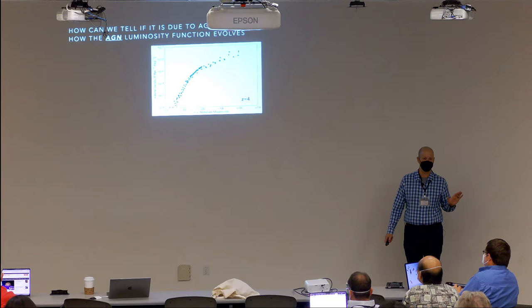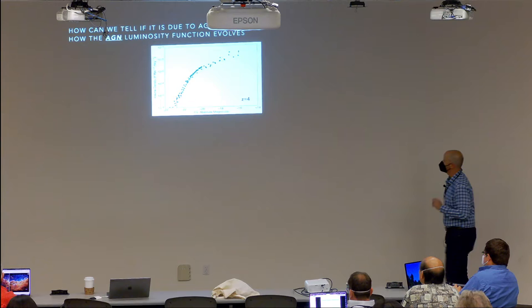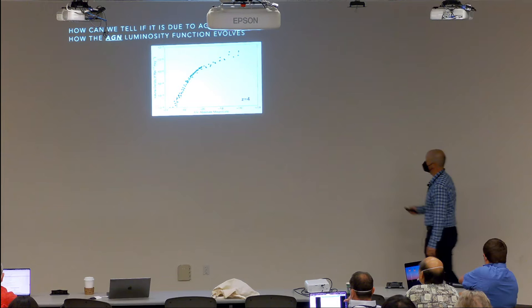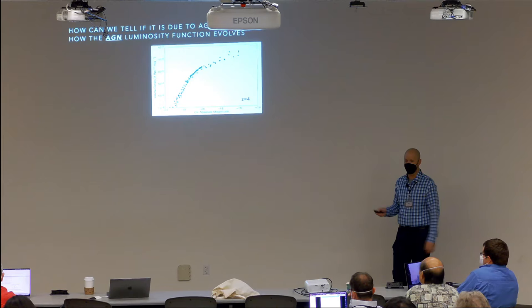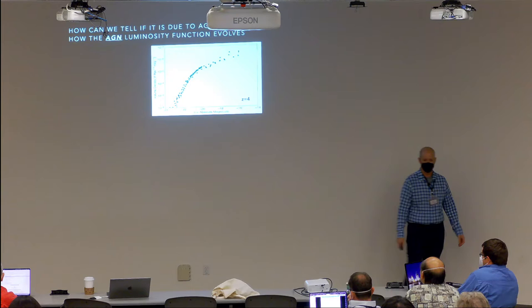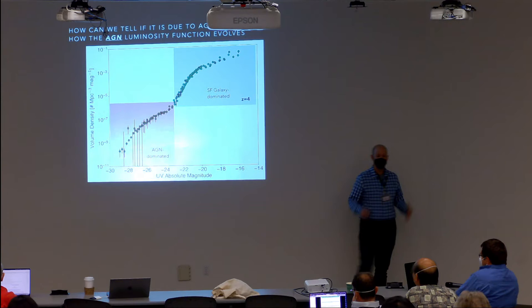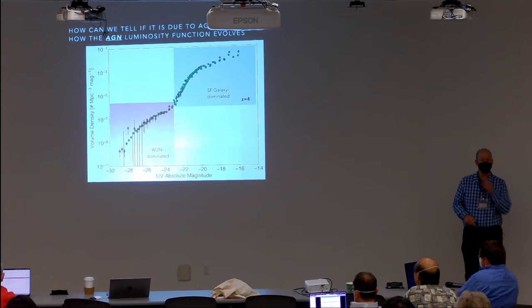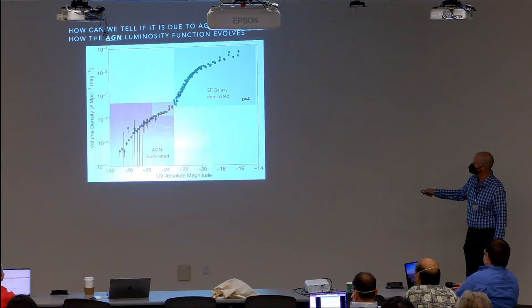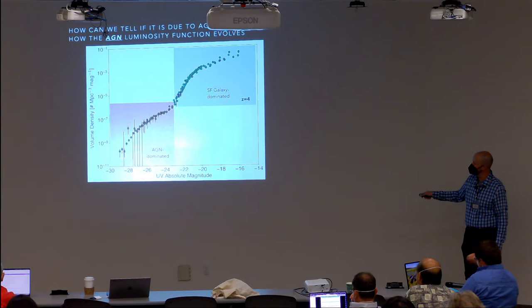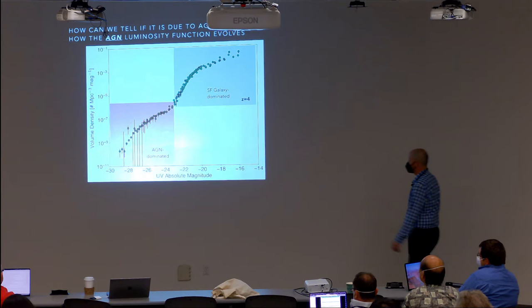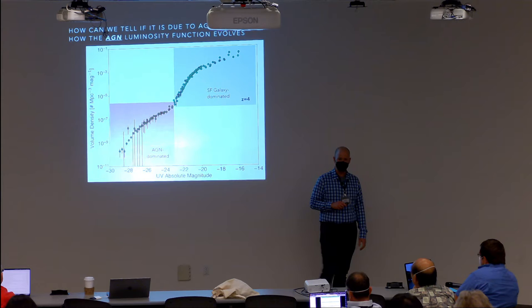AGN is the most exciting explanation. To figure out how likely this is, we need to understand how the AGN luminosity function evolves. Most people focus on the star-forming galaxy part of the luminosity function, but at smaller number densities there are objects whose UV luminosity is dominated by supermassive black hole accretion. At redshift 4 we now have the full picture linking deep fields and wide-area ground-based surveys together.